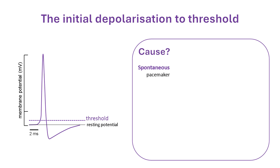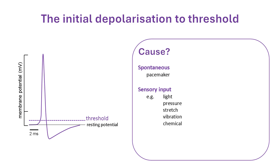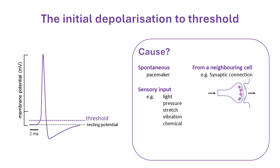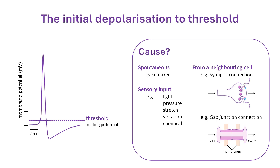The depolarisation could arise from a sensory input, such as light hitting the photosensitive cells of the retina. Some neurons contain receptors that sense pressure, stretch, vibration or specific chemicals and respond by depolarising the membrane. The depolarisation could also be transmitted from a neighbouring cell. This can occur through chemical synapses between neurons, where a neurotransmitter released from one cell onto another activates receptors that cause depolarisation. Action potentials can also be transmitted directly between pairs of cells connected by gap junctions, which form a pore through the adjacent membranes to provide continuity between the cytoplasm of both cells.